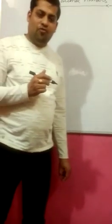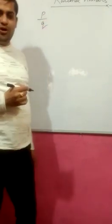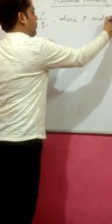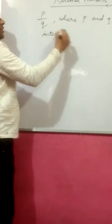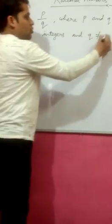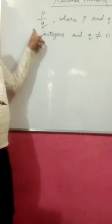A rational number is a number, any number which can be written in the form of P upon Q. Any number which can be written in the form of P by Q where P and Q both are integers and Q should not be equals to zero. Q means the denominator should not be zero.